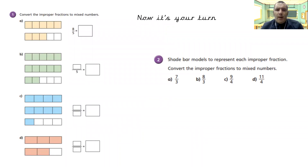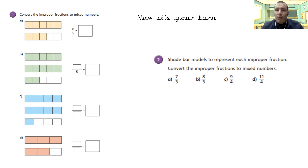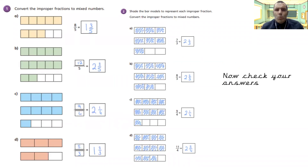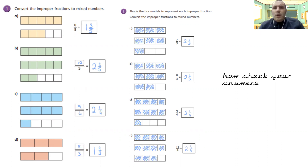Have a go at these. Pause the video here, work your way through them, and when you're ready press play for the answers. How did we get on? Hopefully you've found this nice and easy. If you haven't, go back and watch the last couple of minutes of the video, maybe draw out some of the examples and work them through as I'm talking through the worked examples on the screen. So: eight fifths is the same as one and three fifths. Twelve fifths is the same as two and two fifths. Nine quarters is the same as two and two quarters. Five thirds is one and two thirds.